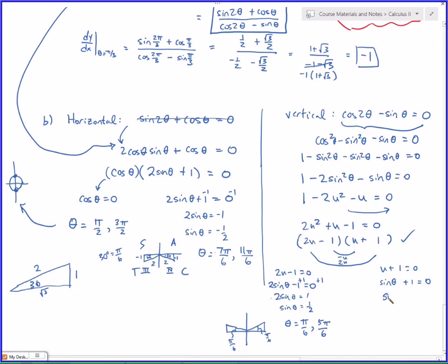This one over here gives me sine of theta is negative 1. That only has one answer between 0 and 2 pi. Remember, sine is the y-coordinate. So 3 pi over 2. So I'm sorry I ran out of space here, but let's come down here and write our final answer.